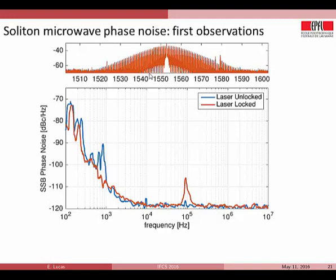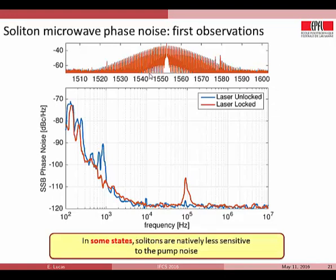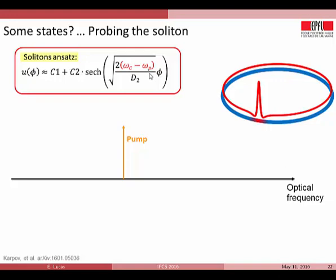We then repeated the experiment with a different soliton state — a two-soliton state — and this time there was no significant difference between the locked and unlocked states; we were already at the ESA instrument limit. This was really surprising: some soliton states are natively less sensitive to pump noise while others are much more sensitive. The problem was we had no way to quantify or evaluate this, since even in single-soliton states we could replicate somewhat different behaviors. So we stepped back and started thinking about ways to really characterize the soliton state.